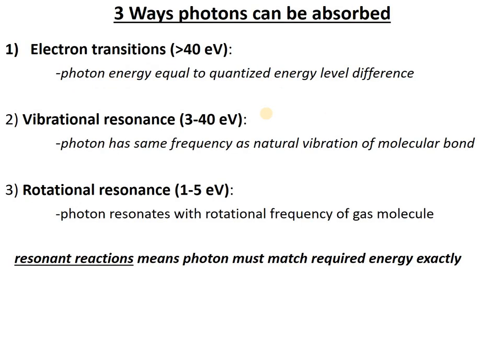If you've never heard about this stuff, you probably want to watch the basics video first. But as a refresher, in remote sensing we're often trying to identify and discriminate materials based on the exact wavelength at which they absorb photons. The exact wavelength where you get a photon absorption peak can be caused by three things: for high energy photons, it's often electron transitions, where a photon bumps an electron up to a higher energy level. For lower energy photons, we can also have vibrational resonances, where that photon triggers vibration of a molecule. And then for gases, we can have rotation, but these don't happen in rocks because the molecules are bonded and not free to rotate.